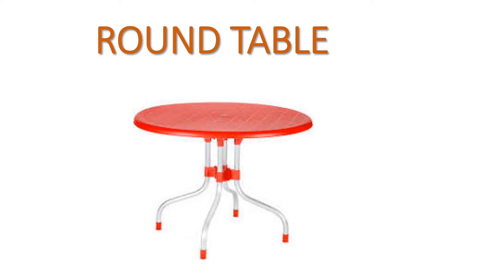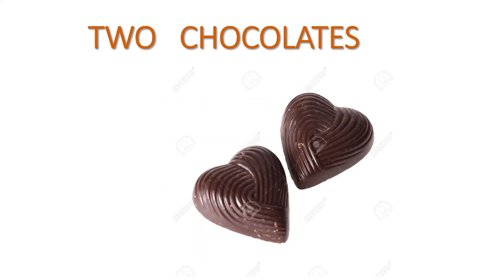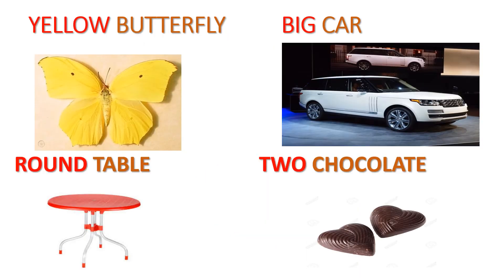Then two chocolates. How many chocolates are there? Two. So yellow, big, round, and two are describing the nouns butterfly, car, table, and chocolates.